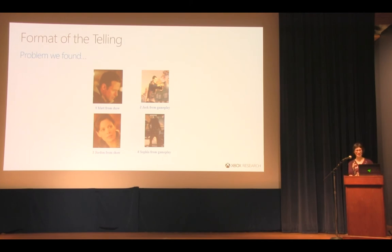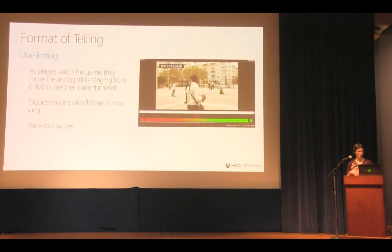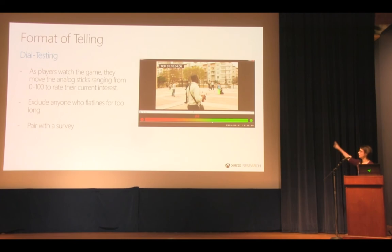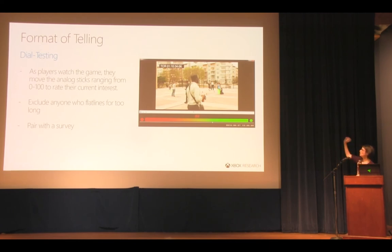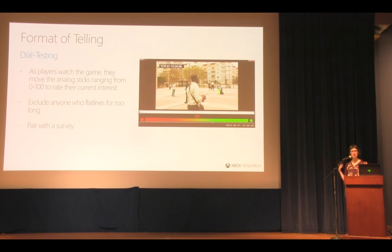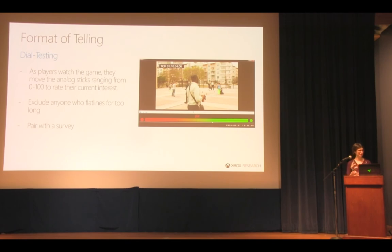When we actually had episodes, we tested them the way television does — we built out a dial testing tool. You hand someone a controller with an analog stick, collect their data second by second, and they rate their interest on a 0 to 100 scale. We did this with rough cuts of the show, so things like green placeholder boxes were still visible and special effects weren't in yet. We paired this data with a survey and excluded anyone who flatlined too long, while having moderators check in with people who weren't giving feedback.